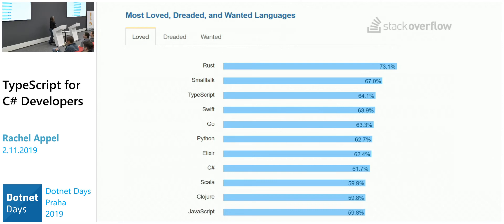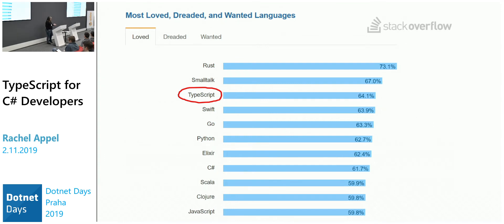TypeScript appeared in Stack Overflow surveys in the most loved languages. It seems all the TypeScript developers voted, along with the Rust and Smalltalk people — and it's a little surprising to see Smalltalk on there. But yes, TypeScript is very popular.